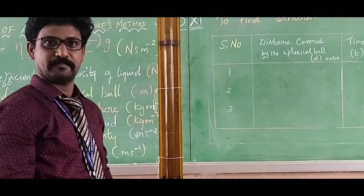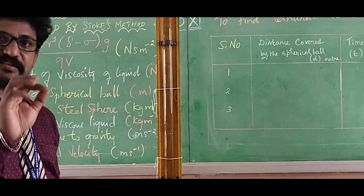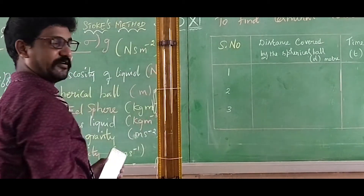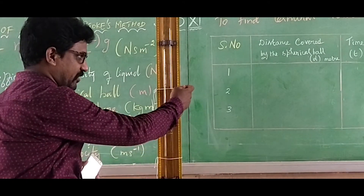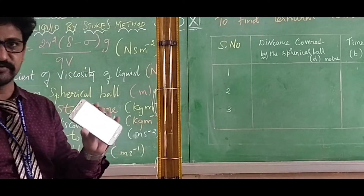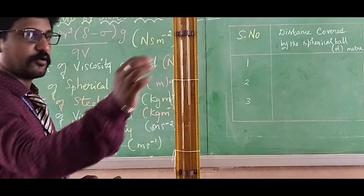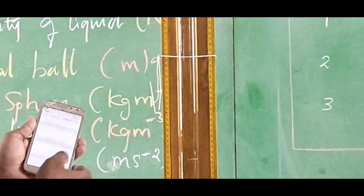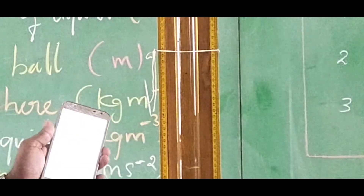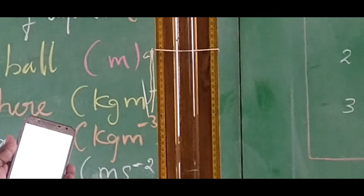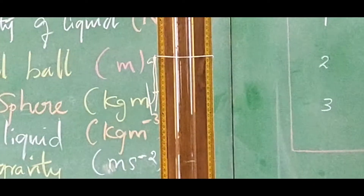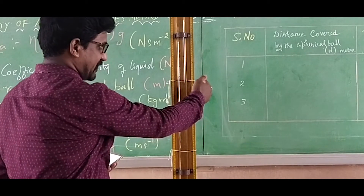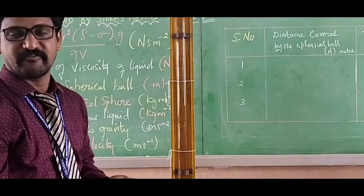Now let me take another metal spherical ball of 3 mm in diameter to be dropped in the long cylindrical jar. The time taken for the ball to travel from reference point A to reference point B is determined using a stopwatch. The stopwatch is started when the sphere reaches reference point A and stopped when it reaches reference point B. The time taken is 4.56 seconds.